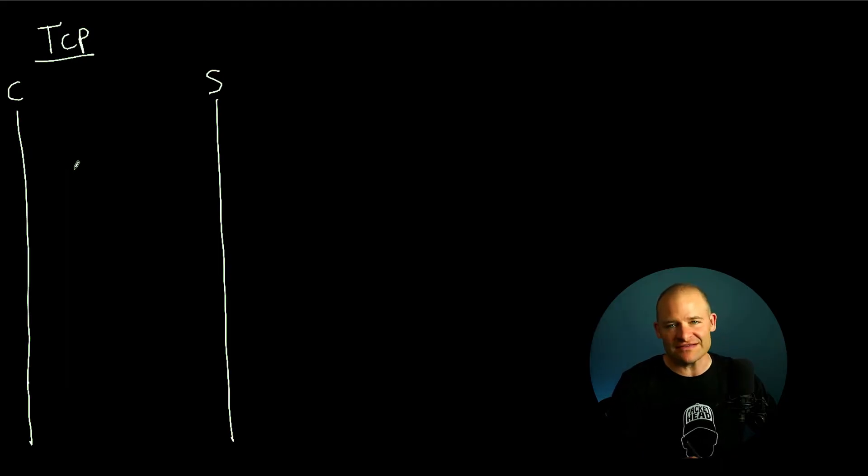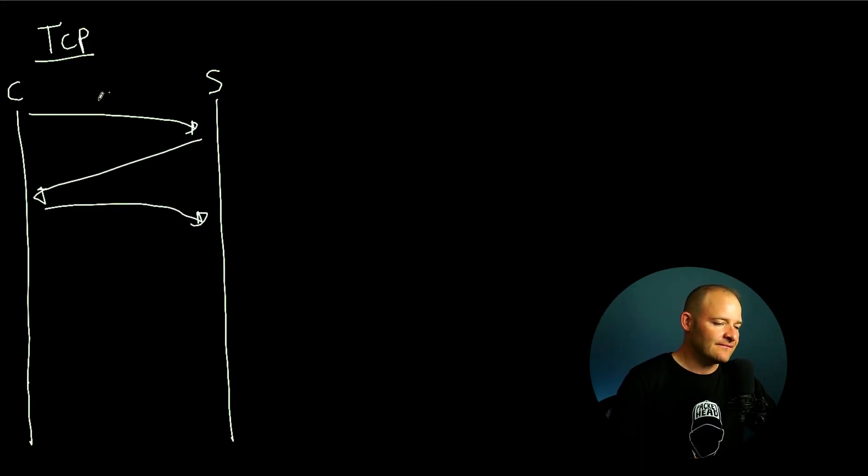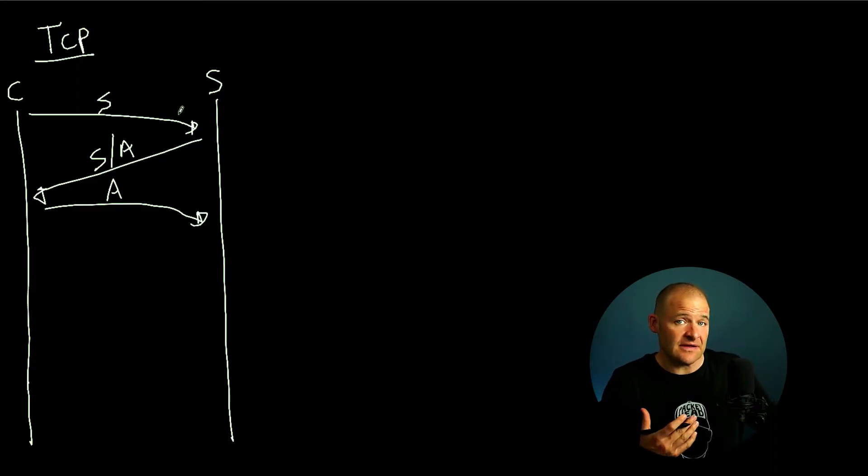TCP first has to set up a three-way handshake. So let's go ahead and draw that in, in order to connect. So there's our SYN, SYNACK, and ACK. Now right here we're already at one network roundtrip.